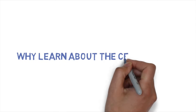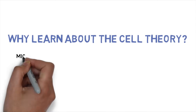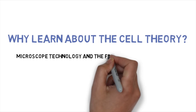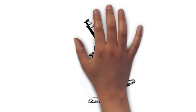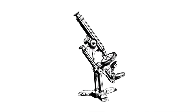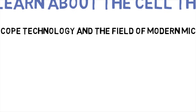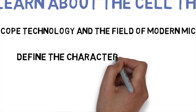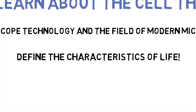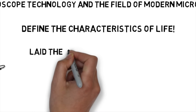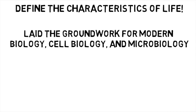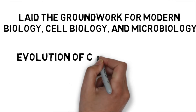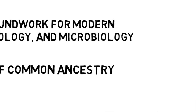A lot of students ask: why is it important we learn about the cell theory? It's not only one of the most significant scientific discoveries ever — we're talking about the discovery of the cell — but it also represented a major evolution in microscope technology that allowed scientists to really visualize what they were hypothesizing in a laboratory. Now that they could actually see cells, they could prove that they existed. These cells helped define the characteristics of life and laid the groundwork for much of modern biology, including microbiology, cell biology, and the study of common ancestry.